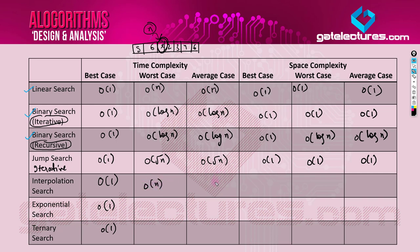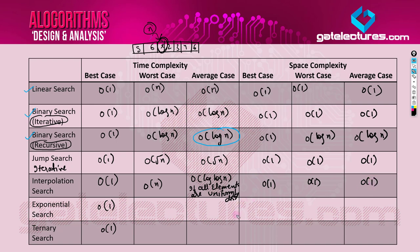For interpolation search, the worst case is O(n), but in the average case — and this is very important — it takes O(log log n) time, which is much less than binary search's O(log n). However, there is one condition: this O(log log n) average case applies only when all the elements in the array are uniformly distributed. We will see in the implementation why it takes O(log log n) in that case. The space complexity is O(1) since it is an iterative implementation.